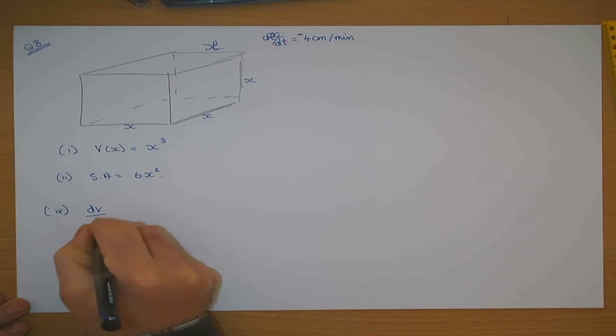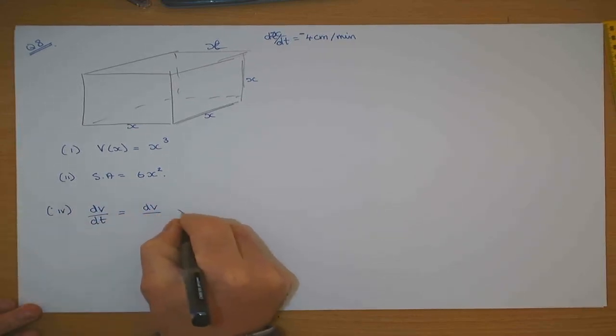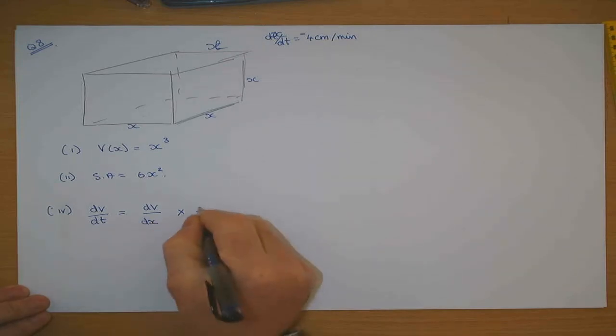What am I asked to find? dV/dt. dV/dt is dV/d-something by d-something/dt. I've changed what I've been asked to find into a chain rule. All these are just chain rules - you've got to find the chain rules.